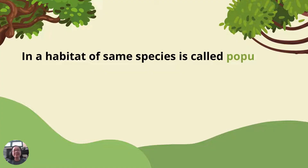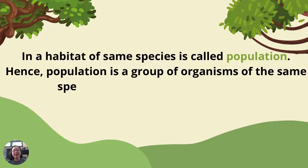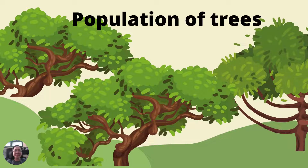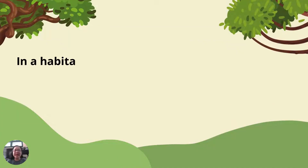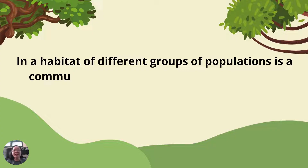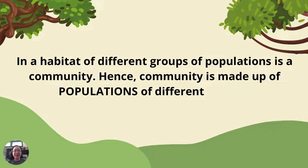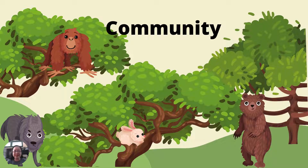The group of the same species living in a habitat is called a population. A population is a group of organisms of the same species that live in the same area. The habitat of different groups of populations is called a community. Communities are made up of populations of different species. This is an example of a community.